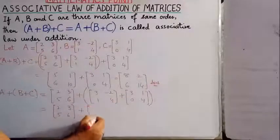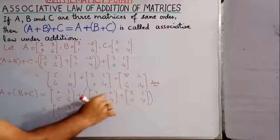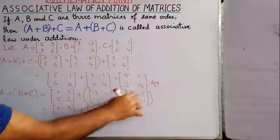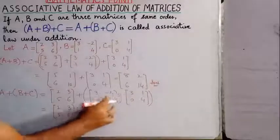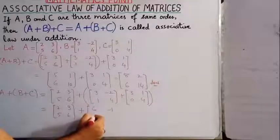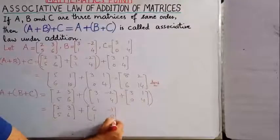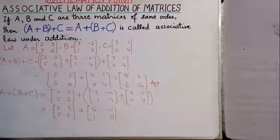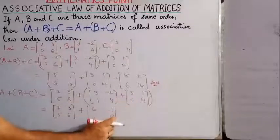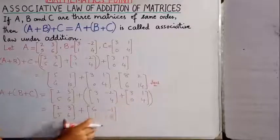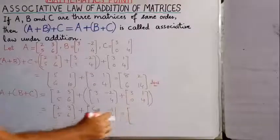B + C: 3 + 3 = 6, −2 + 1 = −1, 1 + 0 = 1, 4 + 4 = 8. Students, this is matrix A with elements 2, 3, 5, 6, and this is the sum of B and C. Now we add these two matrices.